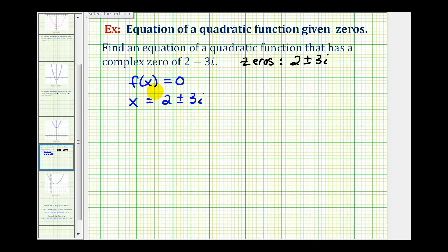So what I mean by that is we'll first subtract 2 on both sides of the equation. So we have x minus 2 must equal plus or minus 3i.